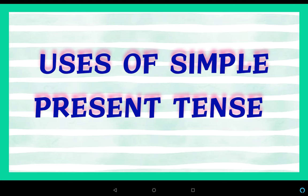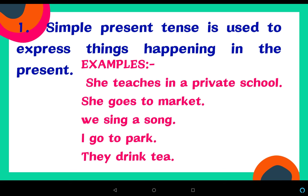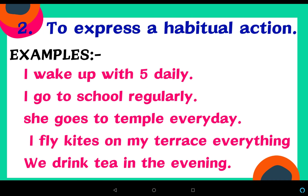Now let's see where we use simple present tense. Simple present tense is used to express things happening in the present. For example: she teaches in a private school, she goes to market, they sing a song, I go to park, they drink tea. Simple present tense is also used to express a habitual action.